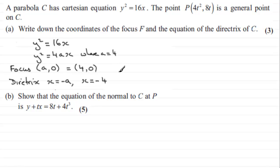Okay, now it goes on to say in part B, show that the equations are normal to the parabola C at P is given by this equation y plus tx equals 8t plus 4t cubed. Now you could do this without a sketch, but I'm just going to do a sketch for you, just to illustrate what's going on.